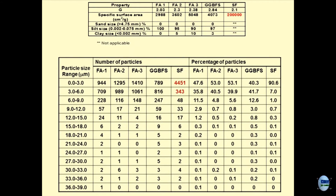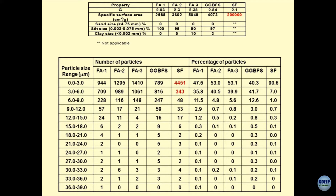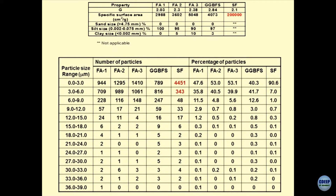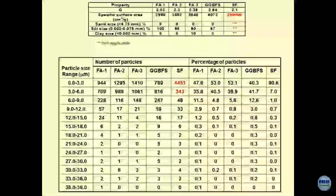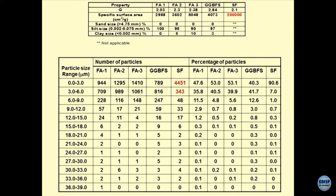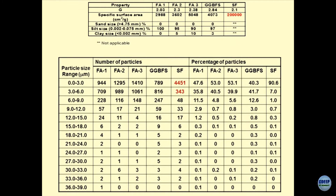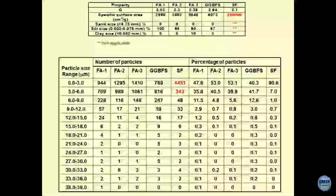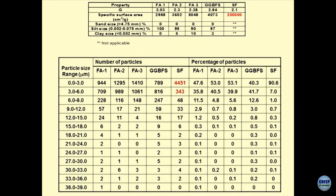Summarizing results: a table shows number of particles and percentage for fly ashes of different types, GGBFS (ground granulated blast furnace slag), and silica fume. Silica fume is very fine powder — most particles fall in less than 3 micrometers — but hydrometer cannot be used because silica fume is very light compared to water and cannot be allowed to settle. GGBFS has self-cementing properties with a lot of calcium oxide, so the moment it contacts water it sets and forms lumps, making hydrometer analysis impossible.